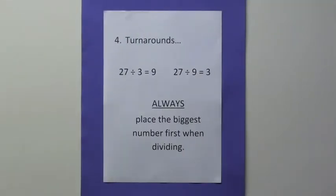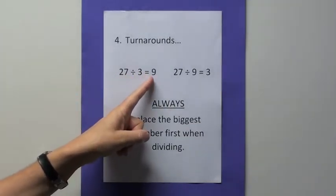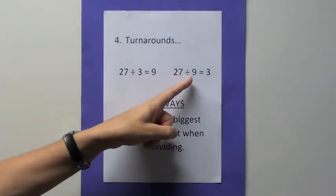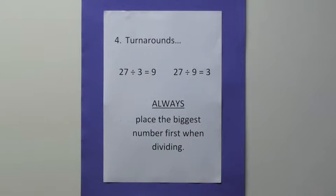Turnarounds can also be used with division. As in this case, 27 divided by 3 equals 9 can be turned around and written as 27 divided by 9 equals 3. Remember, though, that the biggest number must always be placed first when dividing.